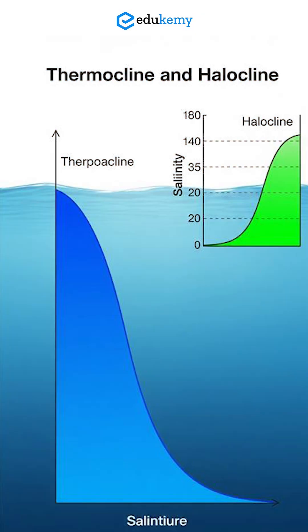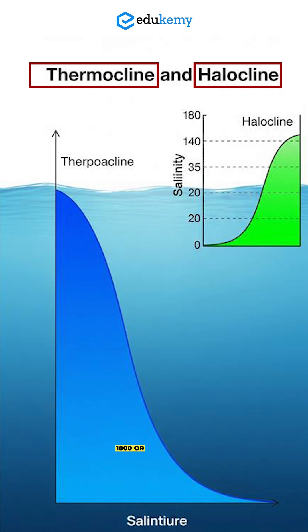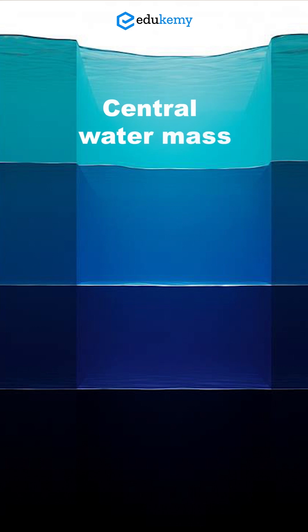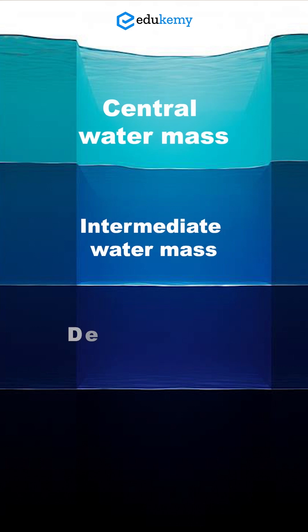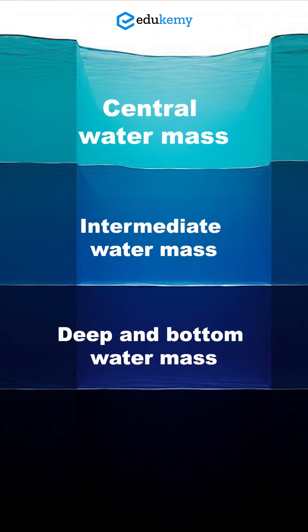We also have layers of oceans on the basis of salinity variations or temperature variations — the upper layers within 200 meters, then the transition layers called the halocline or thermocline, and the deeper waters beyond 1,000 or 1,500 meters. Apart from this, ocean layers can also be classified on the basis of water masses: the central water mass, the intermediate water mass, and the deep and bottom water masses.